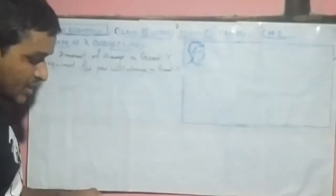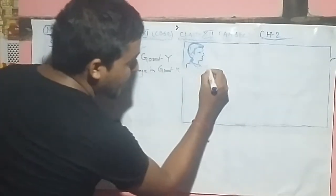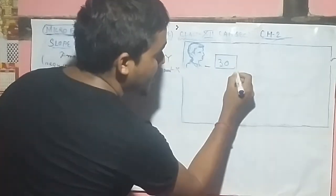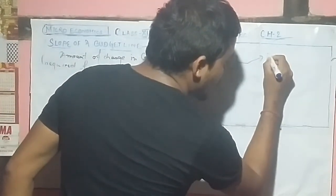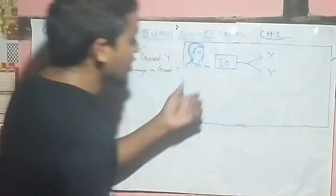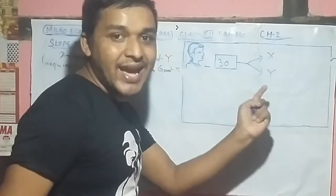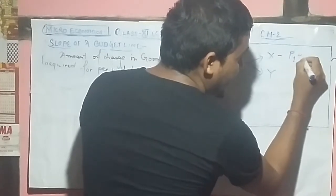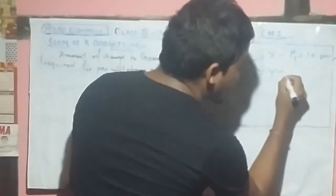Now let us explain this with the help of an example. Say there is an individual and he has an income of 30 rupees. With this income of 30 rupees he went to the market and he wants to purchase Good X and Good Y. Now let us take the price of Good X — let it be p1 — the price of Good X is 10 rupees per unit.